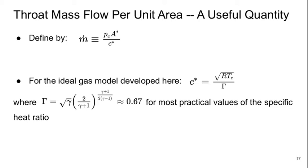So the throat mass flow per unit area is a really useful quantity to use to sort of define what's going on in our nozzle. So if we define our mass flow, our mass flow is going to be the pressure in the combustion chamber, the stagnation pressure in the combustion chamber times the area at the throat over C star.